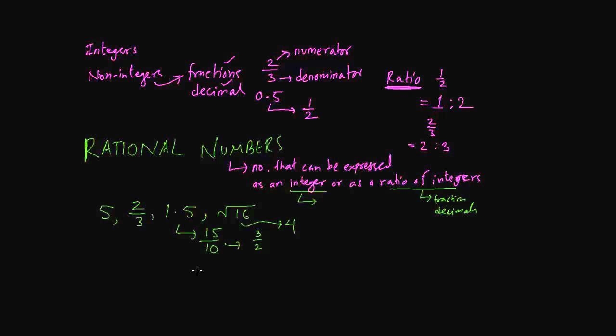Rational numbers is any number that can be expressed using an integer or a ratio of an integer.